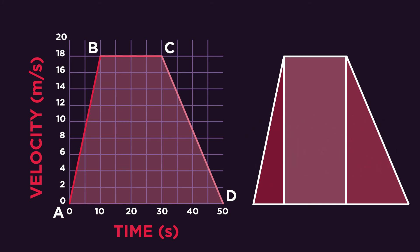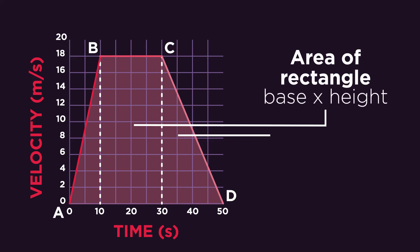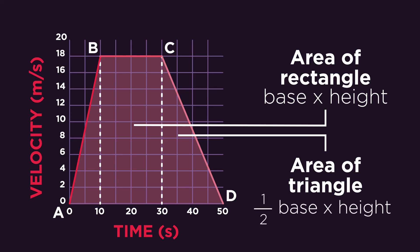Here we have the area under the graph split into three parts. Now try to calculate the value for each part. Remember, the equation for the area of a rectangle is base times height, whilst the area of a triangle is found by half base times height. Pause the video and have a go.